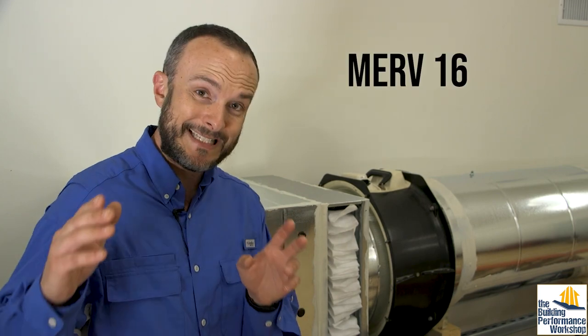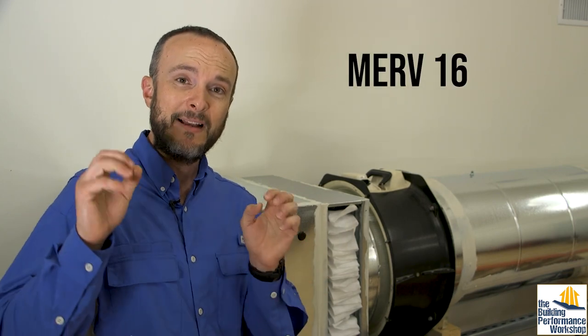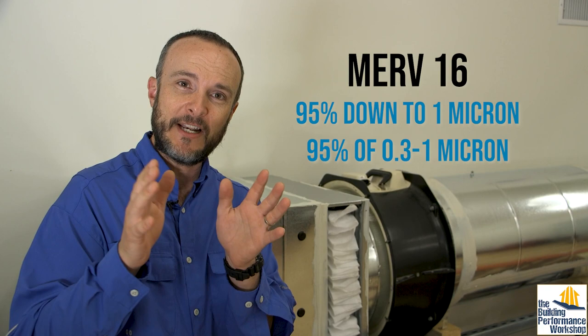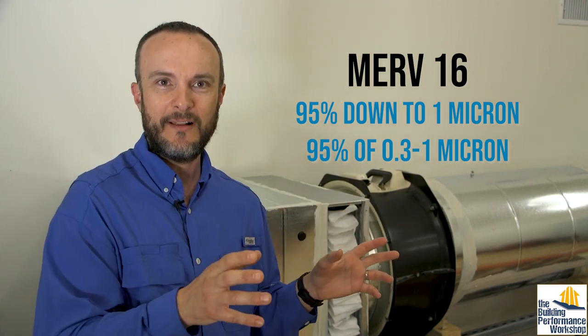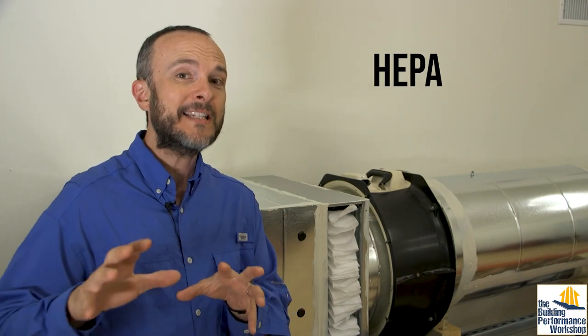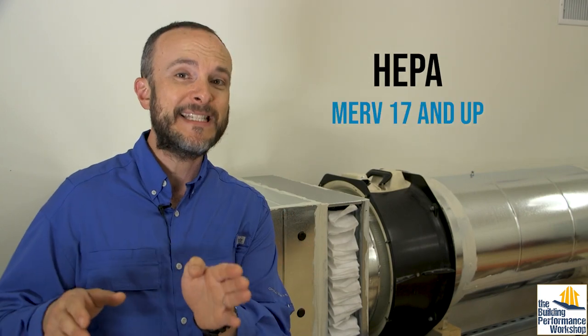Once you really get to a MERV 16, then you're grabbing 95% of all the particles that are big ones down to one micron and 95% of the smaller stuff as well. Now HEPA, which is hospital grade, that starts at MERV 17.